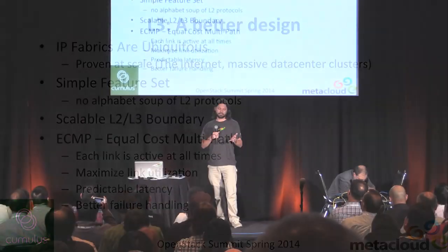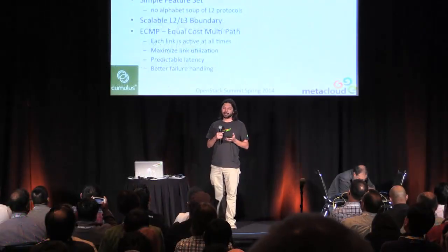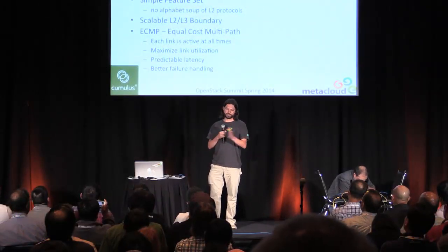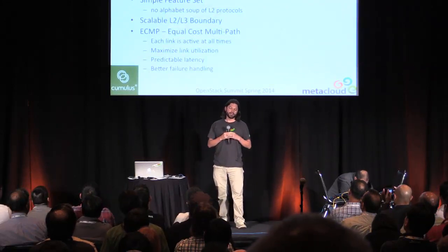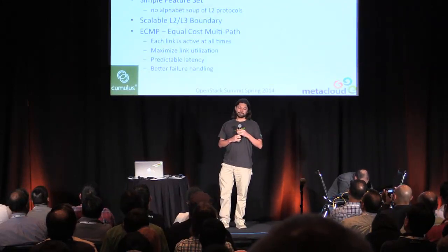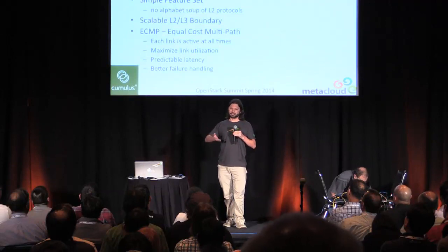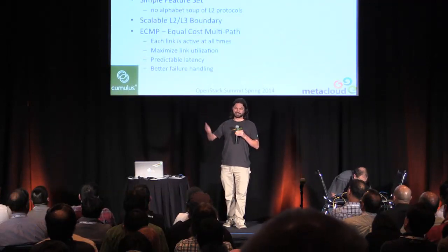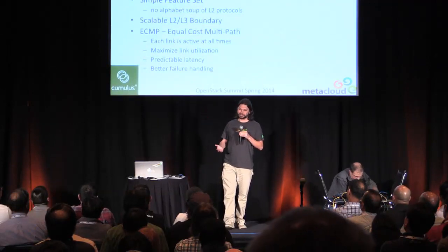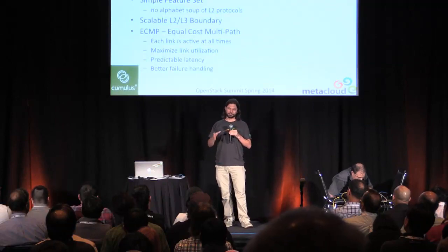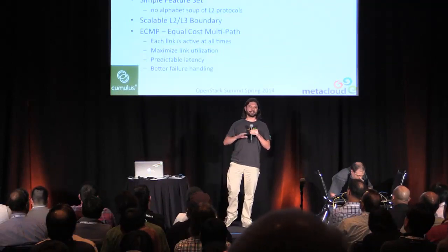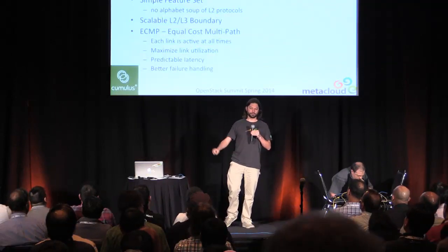And you have ECMP. So now that bottleneck of having 20 links, most of which are disabled, now you can use all of them all the time. And you don't need these complicated proprietary protocols for failover because the internet was designed for failures. The old line is it was designed for Baltimore to take a direct hit and the internet would continue to work.